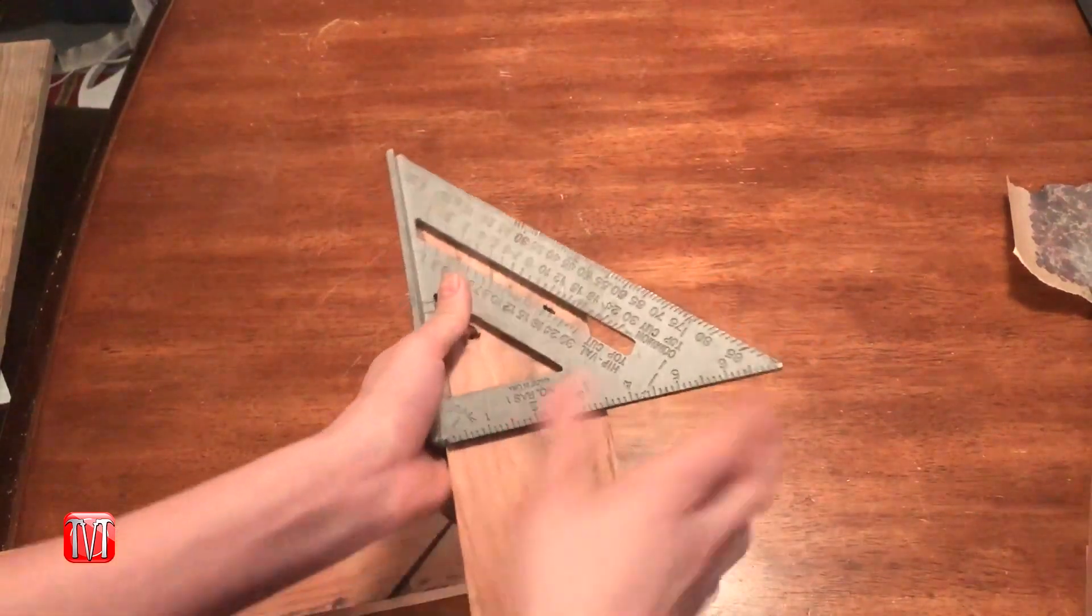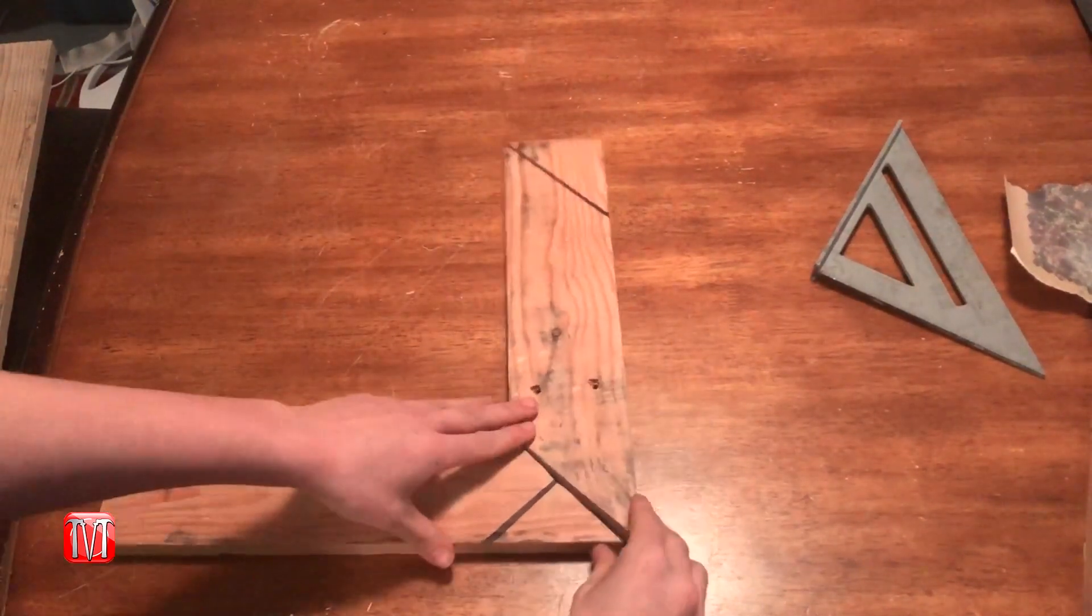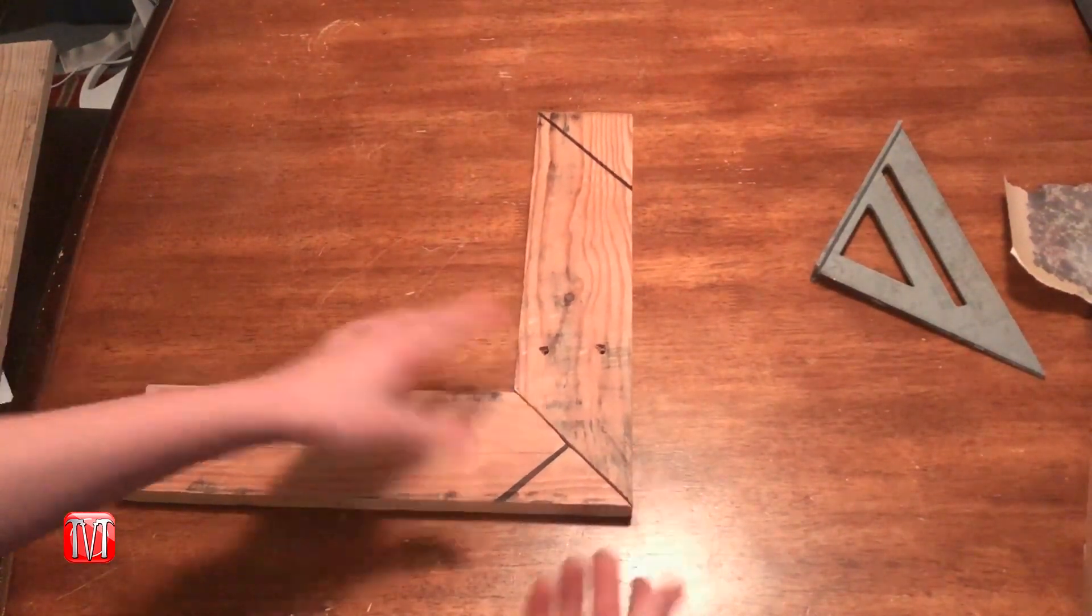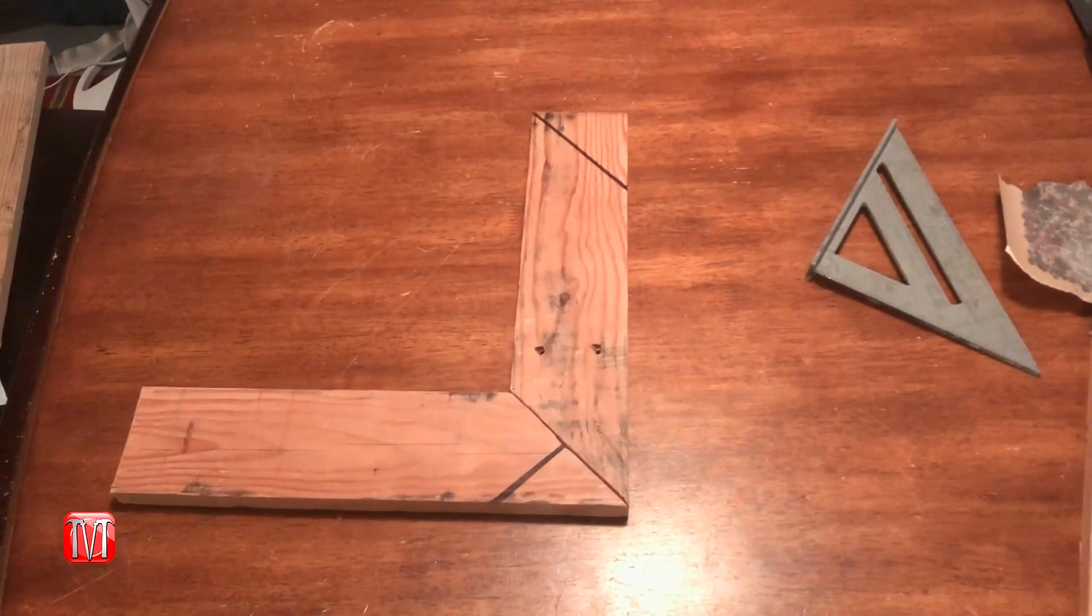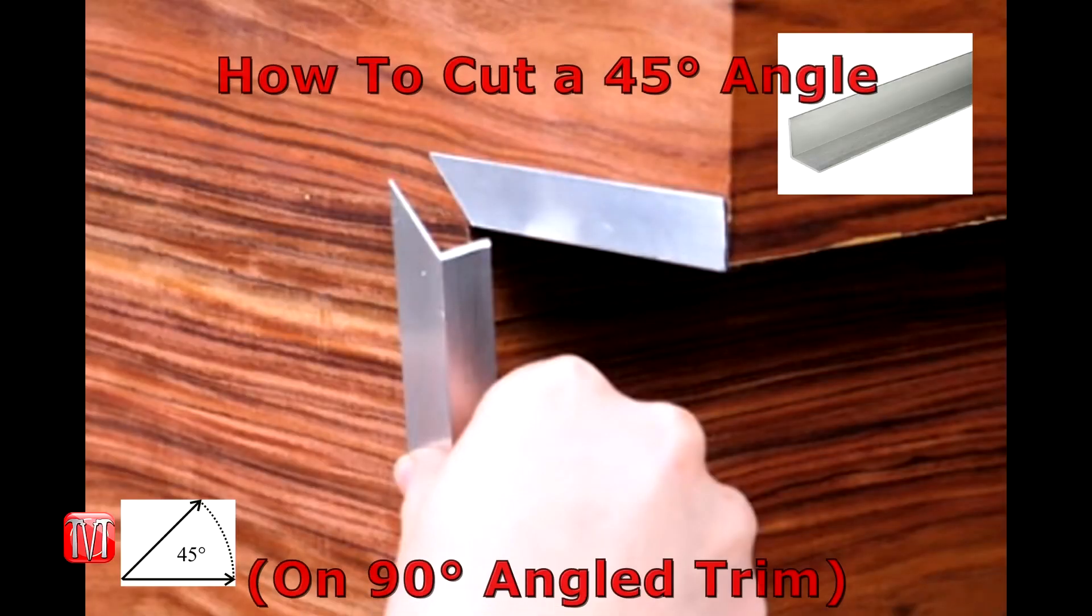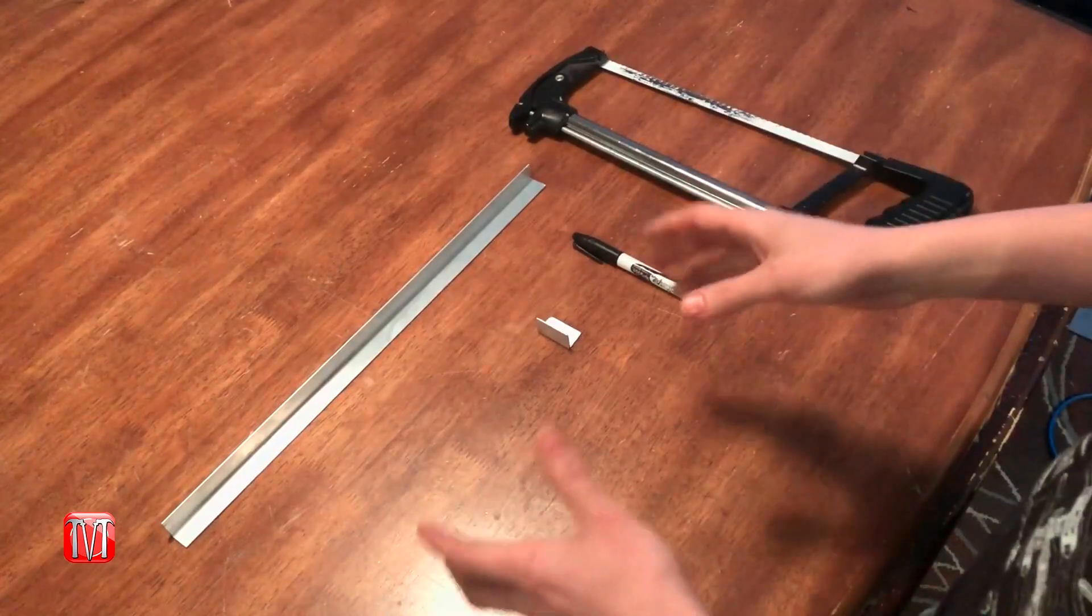When you have two of them put together, you can create a miter joint, just like that. And that's how you cut a 45 degree angle with a straight piece of material.